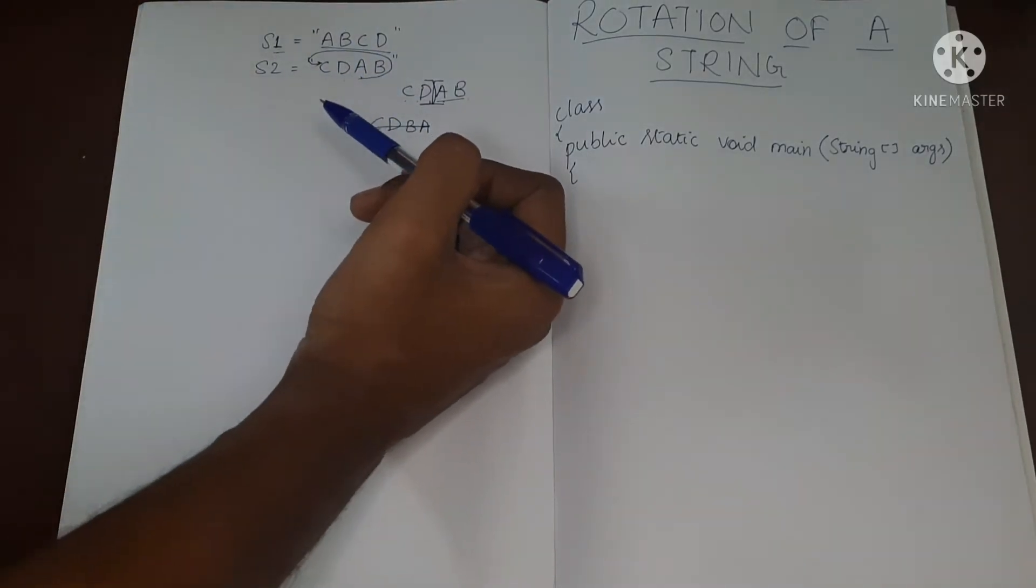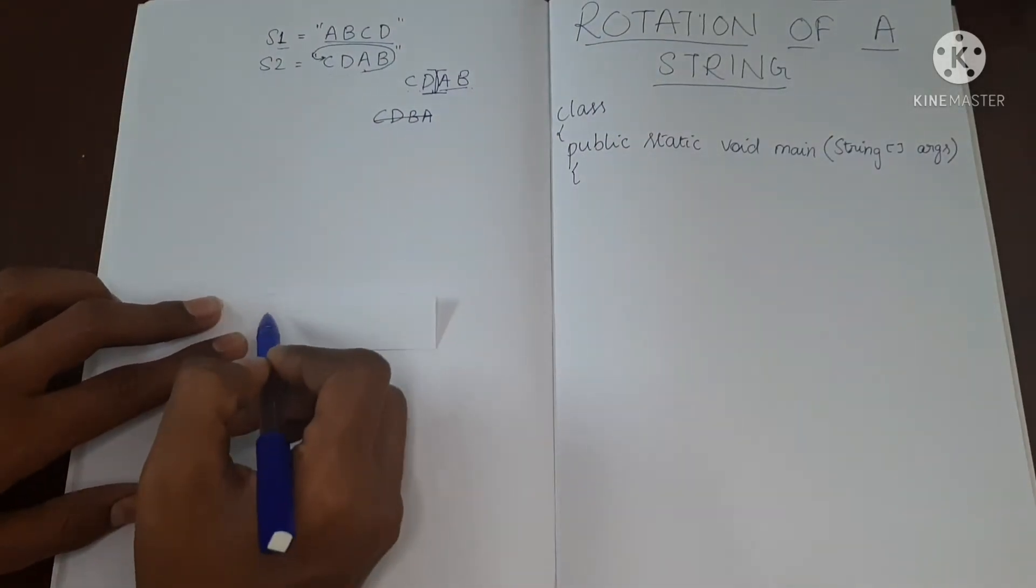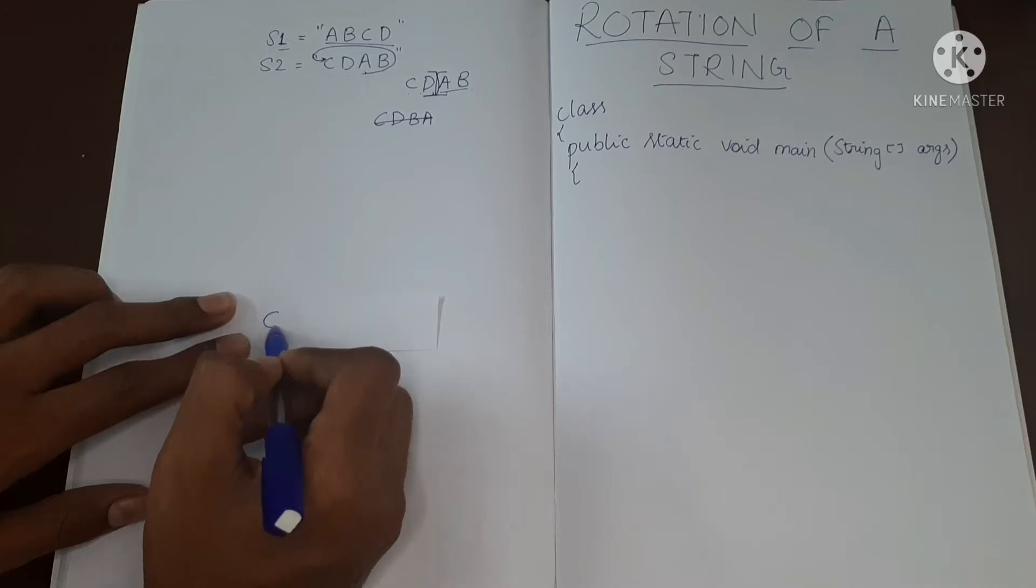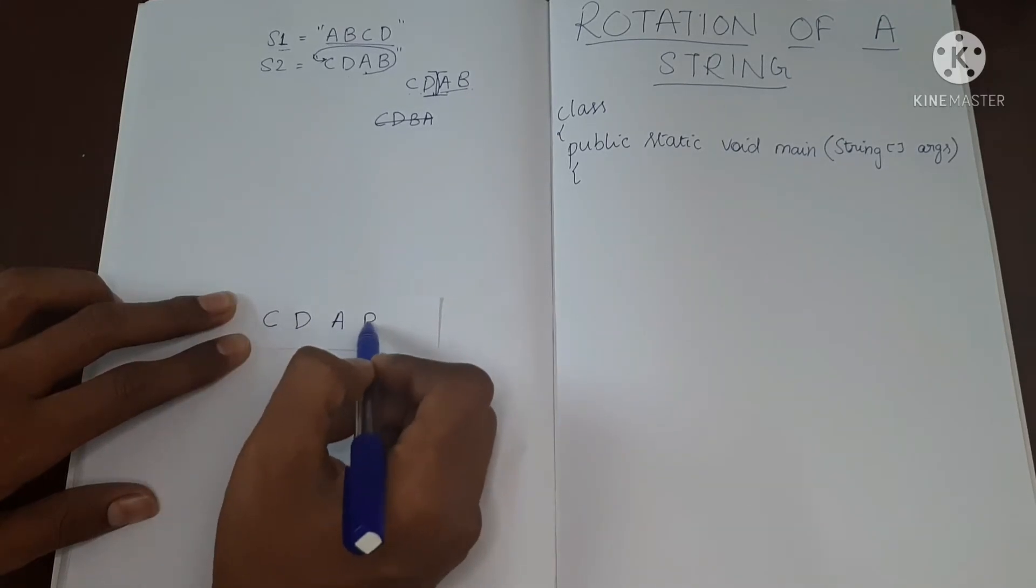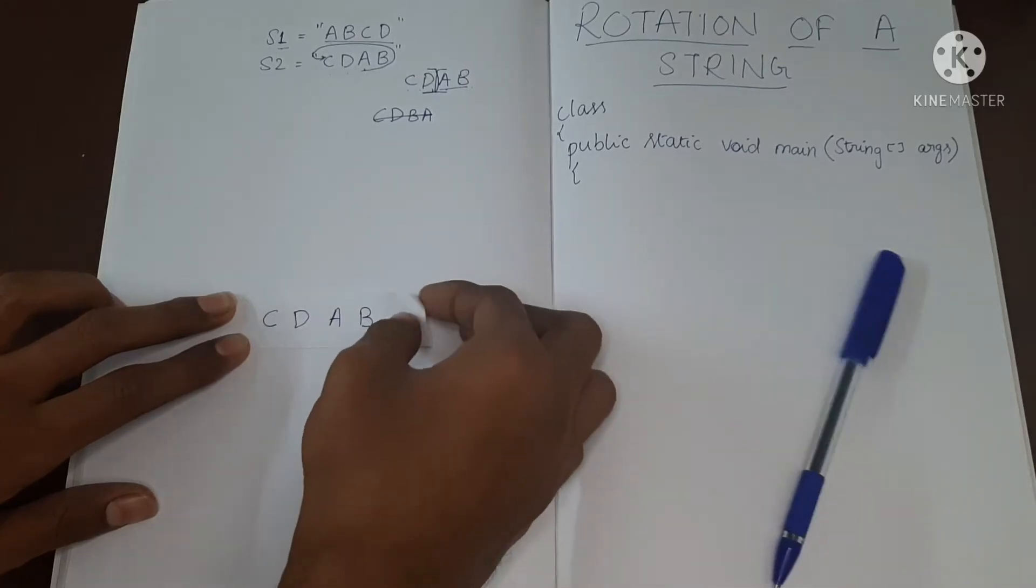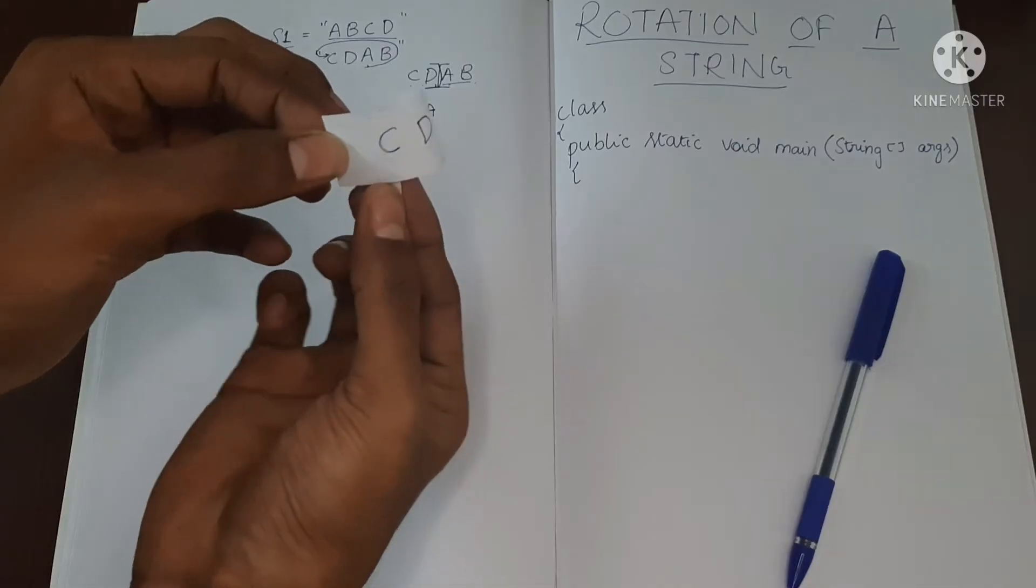So let me explain in a better way. Let's say I have this strip of paper. If I put the second string C, D, A, and B, and if I rotate this, let me just rotate this.